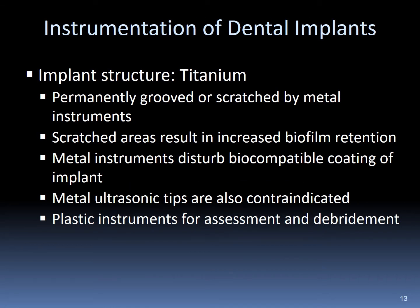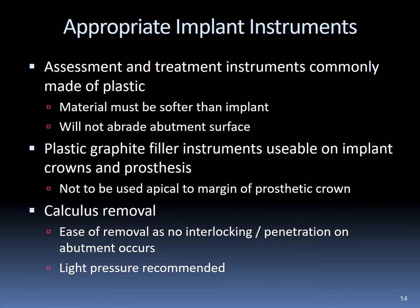The structure of dental implants is made of titanium. This metal is soft and can be permanently scratched with metal instruments. Scratches are believed to cause biofilm retention and disturb the biocompatibility of the implant's coating. Metal ultrasonic tips are contraindicated. Only plastic instruments are recommended for assessment and debridement, along with specially designed Cavitron tips. Assessment and treatment instruments for implants are commonly made of plastics; materials must be softer than titanium or the surfaces will abrade. Plastic graphite filler instruments are used on implant crowns and prostheses but cannot be used apically to the margins of the prosthetic crown.